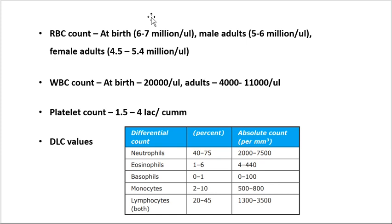Male adults have an RBC count of 5 to 6 million per micro liter and female adults 4.5 to 5.4 million per micro liter. The reason for lower RBC count in females is estrogen, which suppresses erythropoiesis — the formation and synthesis of RBCs. Male adults have testosterone which increases erythropoiesis, which is why there is a difference.